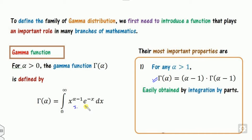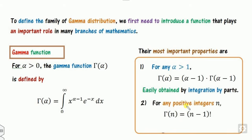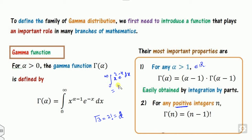On the other hand, if alpha is any positive integer, then the gamma function equals (n minus 1) factorial. So for example, gamma of 3 is 2 factorial, which is 2. Similarly, what is the integral from 0 to infinity — that is nothing but gamma of 3, which equals 2. What is gamma of 7? That is 6 factorial. So if we have gamma of 6, that is 5 factorial, which is 120, and so on.